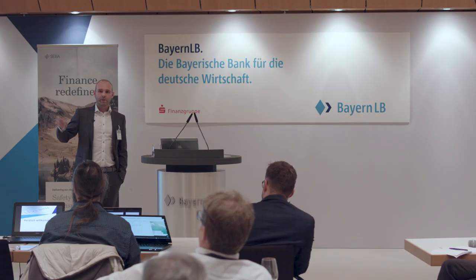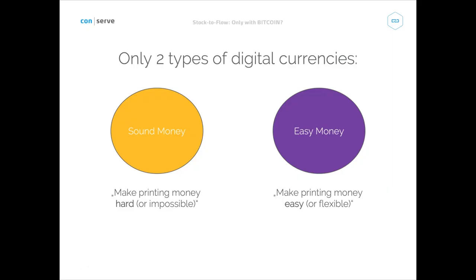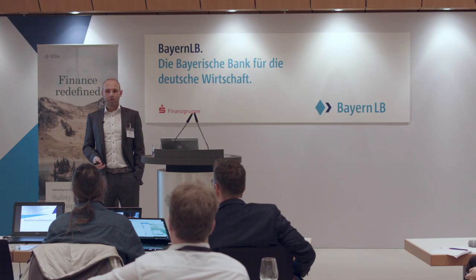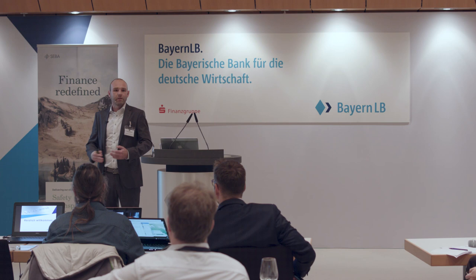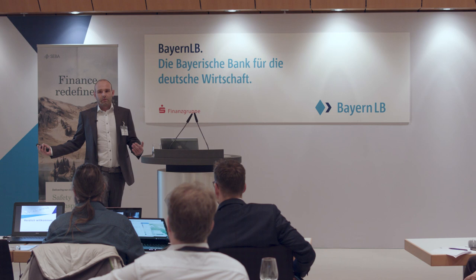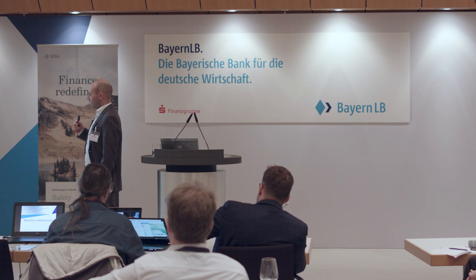Stock-to-flow is completely irrelevant for easy money — if you're interested in easy money, why care about stock-to-flow? The idea is that sound money reduces uncertainty about future stock-to-flow, while easy money increases it. We only need to look at candidates in the sound money area. Even Litecoin or Ethereum may not follow stock-to-flow. Ripple, for instance, had 100 billion tokens created from the beginning — there's stock but no flow. The market doesn't know with what frequency the majority holder will release tokens to the market.